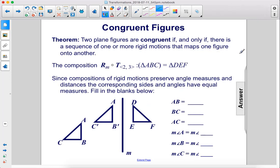Two plane figures are congruent if and only if there's a sequence of one or more rigid motions that maps one figure onto the other. The composition here maps triangle ABC onto triangle DEF by first translating it and then reflecting it across line M. Since compositions of rigid motions preserve angle measures and distances, the corresponding sides and angles have equal measures.